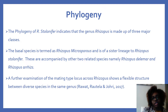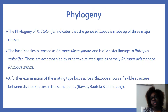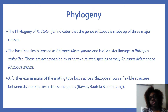It is the genus Rhizopus that is made up of three major classes, which are the basil — a species termed as Rhizopus microsporos — and it is the sister lineage to Rhizopostolonyphor. These are accompanied by two other related species, namely Rhizopost dilemma and Rhizopost aries.